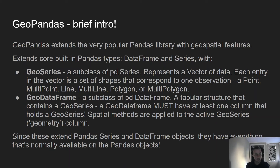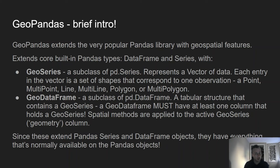So if you had a set of landmarks — train stations, bus stations, football stadiums, car parks — you could encode them in a GeoSeries that represents where they are as point objects. The same applies to rivers as line objects and cities as polygons. GeoDataFrames are similar but have additional columns that aren't necessarily geometrical or geographical columns.